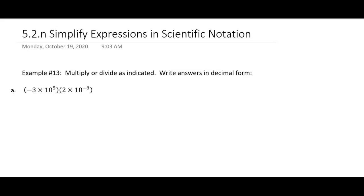They give us a couple examples of two numbers in scientific notation and we're going to simplify them according to the operation. It says multiply or divide as indicated, write answers in decimal form. In part A you've got negative 3 times 10 to the fifth times 2 times 10 to the negative 8. All of that is multiplication.